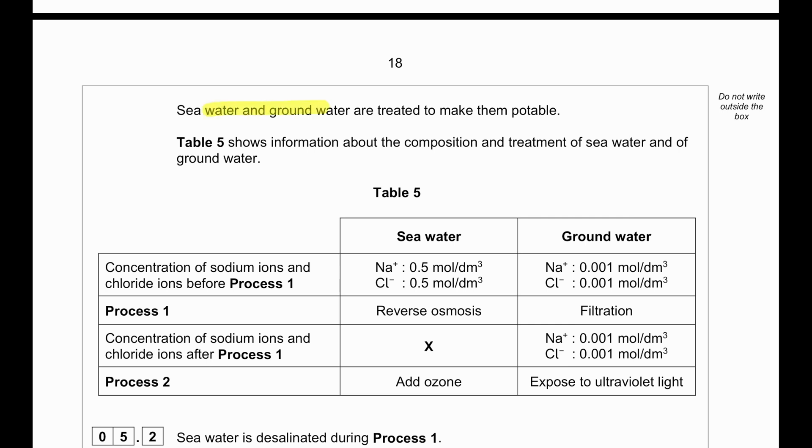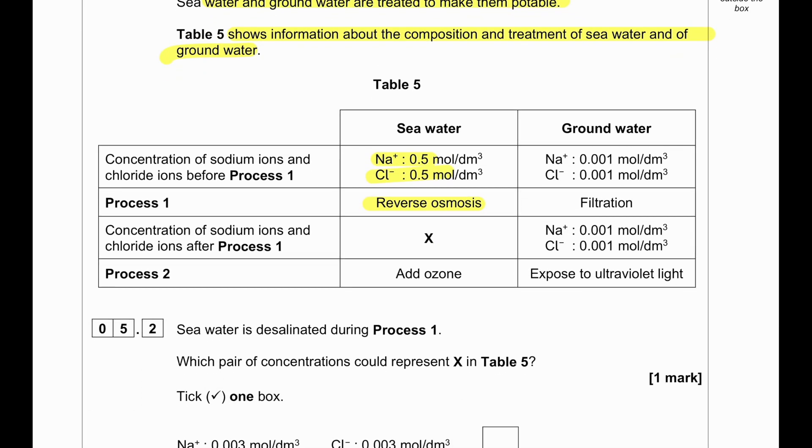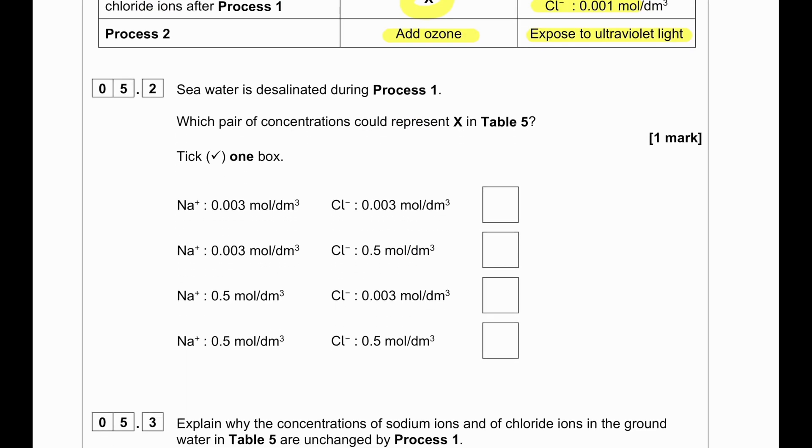Seawater and groundwater are treated to make them potable. Table 5 shows the information about the composition and treatment of seawater and groundwater. Seawater consists of 0.5 moles per dm³ of sodium and chloride. The process to produce potable water would be reverse osmosis. The concentration of sodium ions and chloride ions is negligible, and then ozone is added to kill bacteria. In terms of groundwater, it consists of 0.001 moles per dm³ sodium and chloride ion. Filtration is carried out and this does not decrease any concentration of sodium and chloride ion, and then it is exposed to ultraviolet light. UV light destroys bacteria and makes it potable.